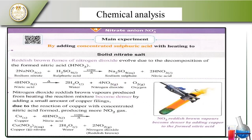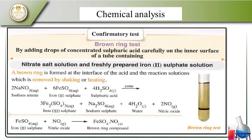For the nitrate test, we use the brown ring test. When solid nitrate is mixed with concentrated sulfuric acid, nitrogen dioxide gas is produced. Sulfur (carbon) with concentrated nitric acid gives more nitrogen dioxide gas. Carbon with nitric acid gives carbon nitrate, water, and nitrogen dioxide. This is an important experiment: adding drops of concentrated sulfuric acid carefully to the inner surface of a tube containing nitrate salt solution with freshly prepared iron sulfate solution gives the brown ring.